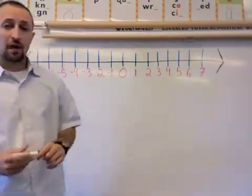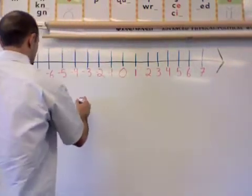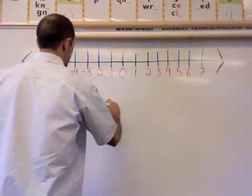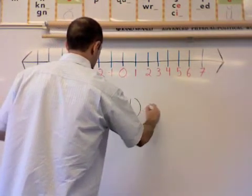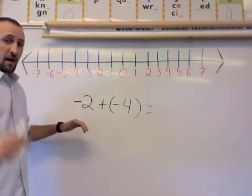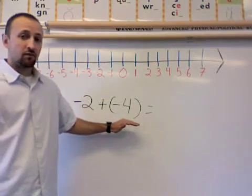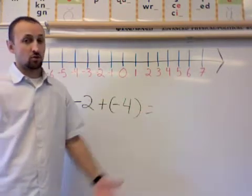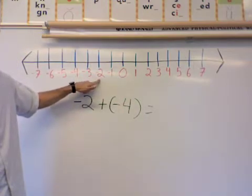Now we can start looking at adding integers. So let's say we're given negative 2 and I want to add it to negative 4. Well, this is where my number line is going to come in handy. Now I know right off the bat, I'm going to give you guys this hint, that whenever I add negative integers, my answer is also going to be negative.